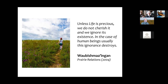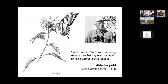We share with Wild Ones the notion that unless life is precious to us, we don't cherish it — and in the case of human beings this ignorance usually destroys. That's a quote from Wabish Ma'iingan, an Ojibwe writer who wrote a book called Prairie Relations about our relationship to the prairie told through Native American stories. We also relate to Aldo Leopold's quote: when we see land as a community to which we belong, we may begin to use it with love and respect. Both parts of what we do — prairie management and native plant gardening — are really important.